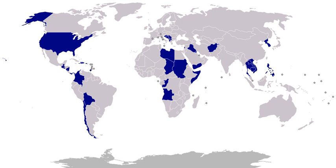1967, Israel, USS Liberty incident: a United States Navy technical research ship was attacked June 8, 1967 by Israeli armed forces, killing 34 and wounding more than 170 U.S. crew members. 1967, Congo, Zaire: the United States sent three military transport aircraft with crews to provide the Congo central government with logistical support during a revolt. 1968, Laos and Cambodia: U.S. starts secret bombing campaign against targets along the Ho Chi Minh Trail in the sovereign nations of Cambodia and Laos. The bombings last at least two years. See Operation Commando Hunt.